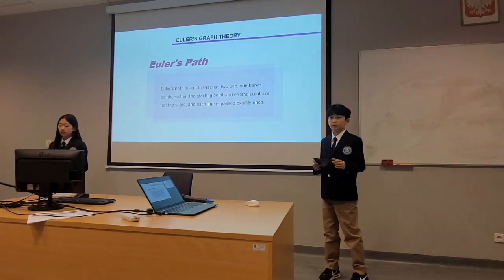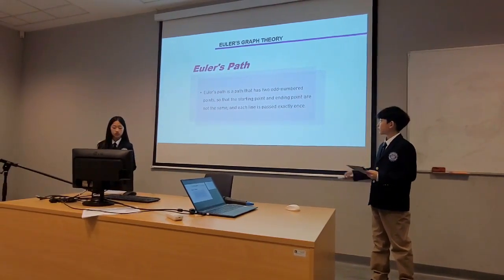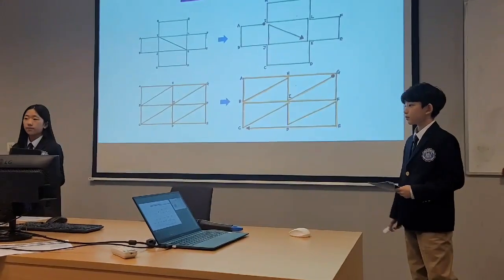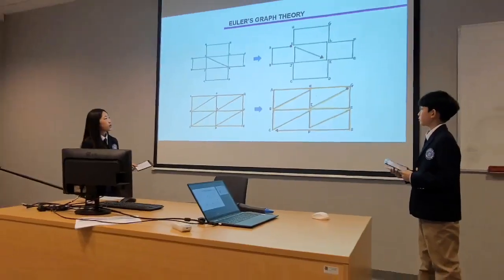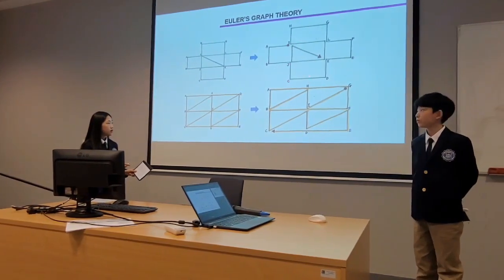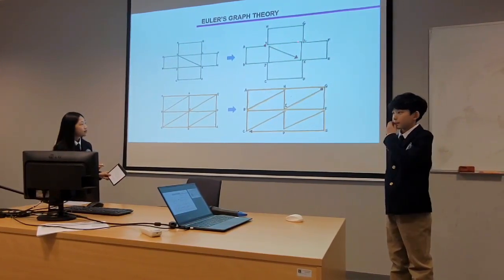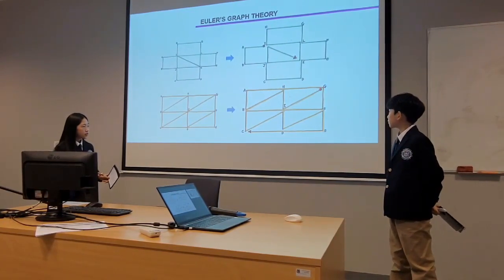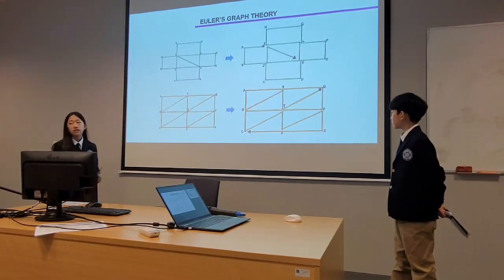Euler's path is a path that has two odd-numbered points, so the starting point and ending point are not the same, and each line is passed exactly once. Let's look at some examples of Euler's path. These two figures have ten even points and two odd points, and the starting and ending points are different. The first figure starts at point I and ends at point K. The second figure starts at point G and ends at point C.